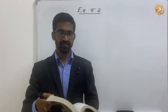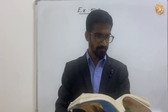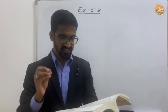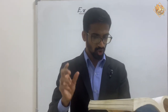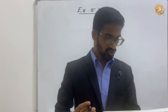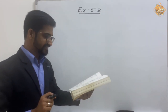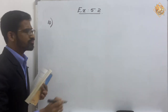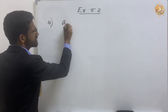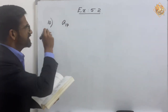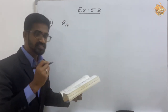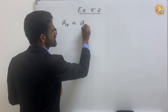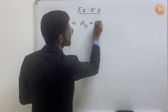Students, please look at question number 10, Exercise 5.2, page number 10. The 17th term of an AP exceeds its 10th term by 7 — find the common difference. In the question it is given that the 17th term exceeds the 10th term by 7, which means the 17th term will be equal to the 10th term plus 7.